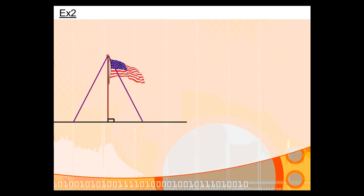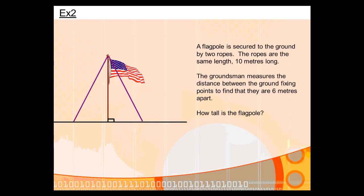Let's look at another example. This time we've got a flagpole secured to the ground by two guy ropes. You're told that the ropes are the same length, each 10 metres long, and that a groundsman marks the distance between the two anchor points where these ropes are fixed to the ground, finding that they're 6 metres apart. The question asks for the height of the flagpole. We don't have to draw any lines, because the flagpole itself breaks up this isosceles triangle into two right-angled triangles. So all we need to do is isolate the right-angled triangle.